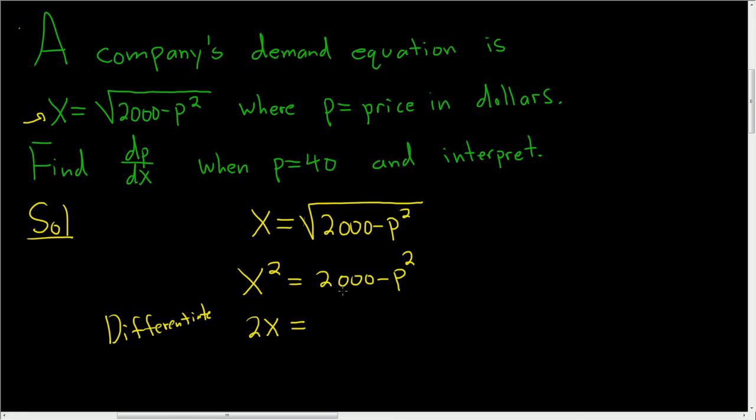The derivative of 2000 is zero. And here when you take the derivative, you bring the two down. So you get minus 2p times the derivative of p with respect to x. So dp/dx, chain rule.